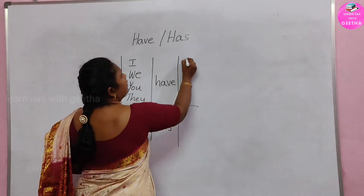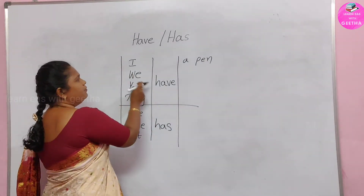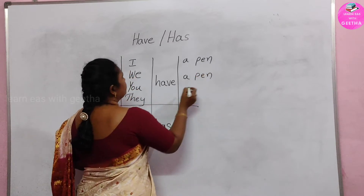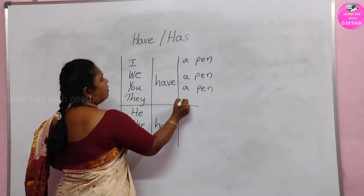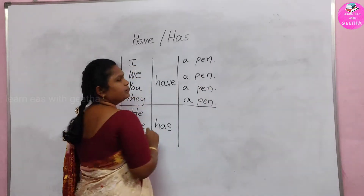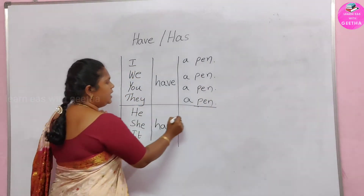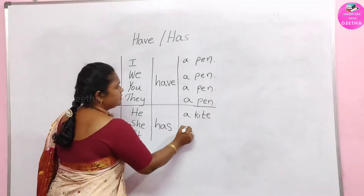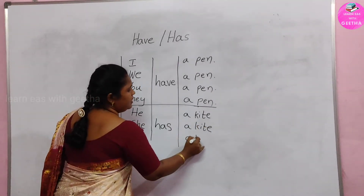I have a pen. We have a pen. You have a pen. They have a pen. Next — he has a kite. She has a kite. It has a kite.